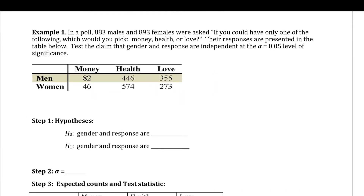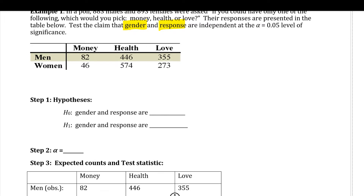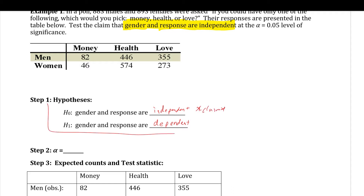Example one: In a poll, 883 males and 893 females were asked, 'If you could have only one of the following, which would you pick?' — money, health, or love. The responses are in the table. Test the claim that gender and response are independent. Step one: the null hypothesis is that gender and response are independent; the alternative is that they are dependent. The claim matches the null hypothesis.